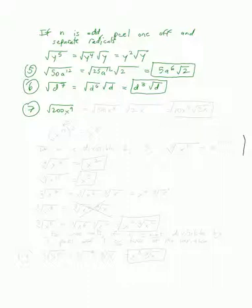Square root of 200x to the ninth. The largest perfect square that goes into 200 is 100, so we put 100 on the left and 2 on the right. For the x's, we take one off and leave eight of them in the nice piece. The left becomes 10x to the fourth, and the right becomes square root of 2x. That is our answer.